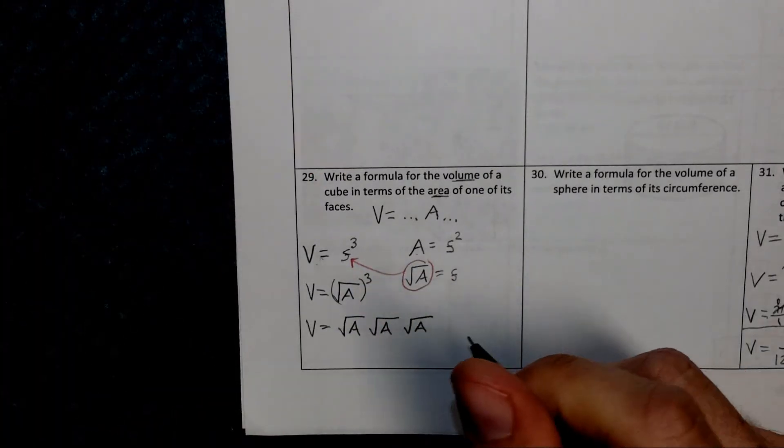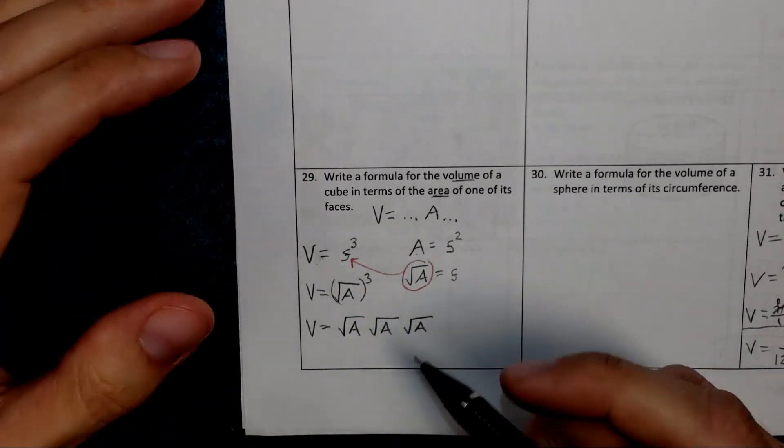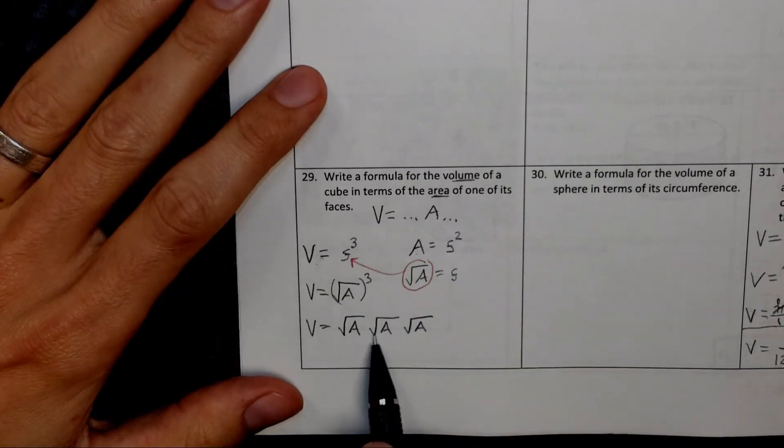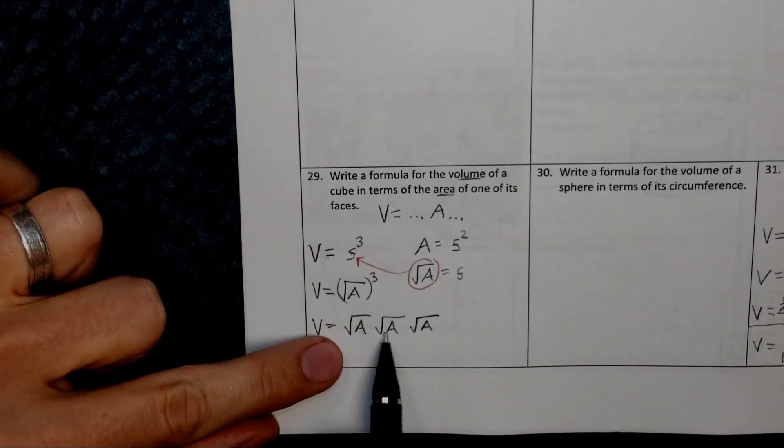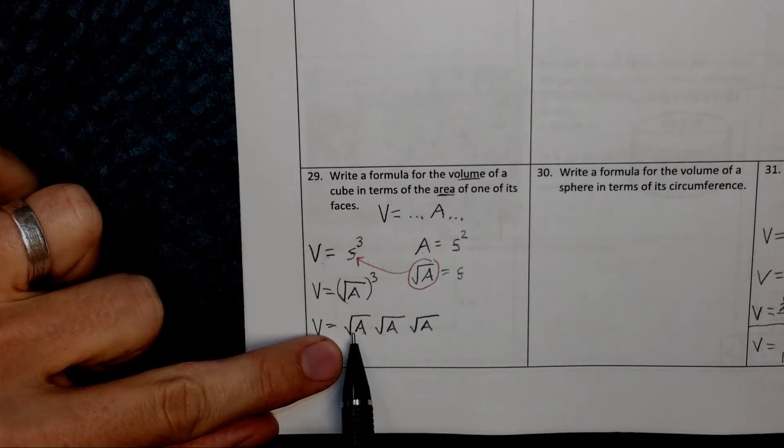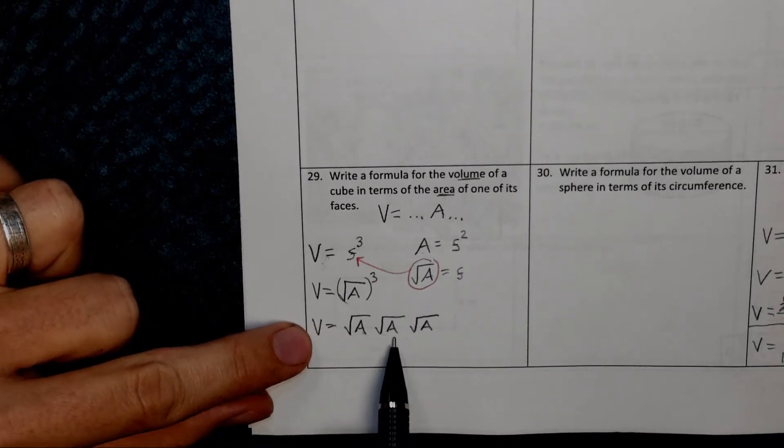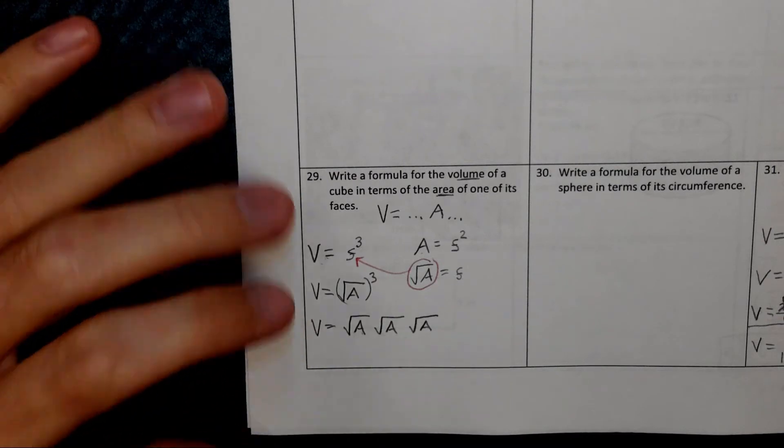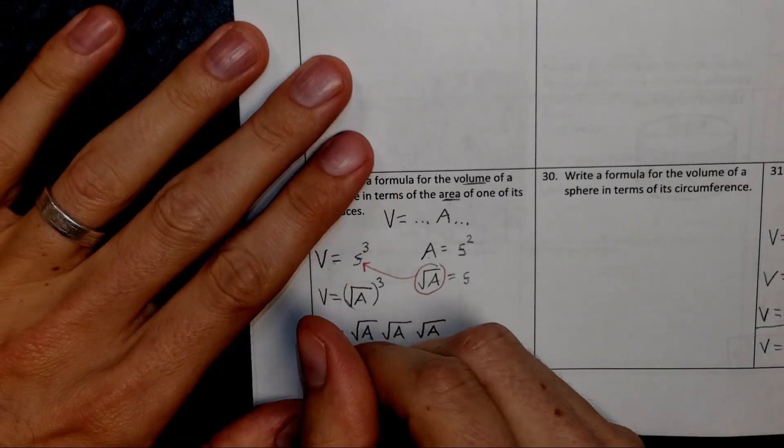So can we write this in a little bit simpler way? Maybe it would be simpler. Maybe it wouldn't if we multiply, let's say, let's try and multiply these together two at a time. So what's the square root of A times the square root of A? Well, it's A.